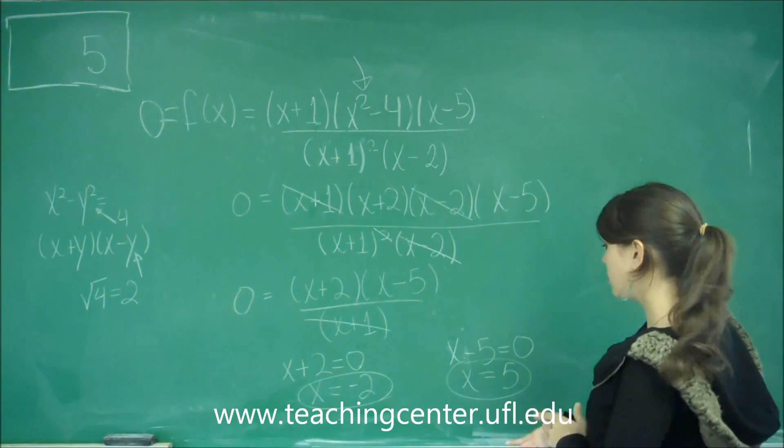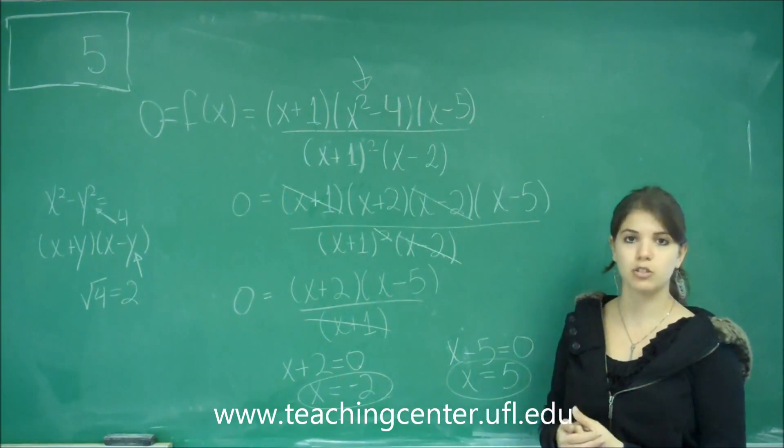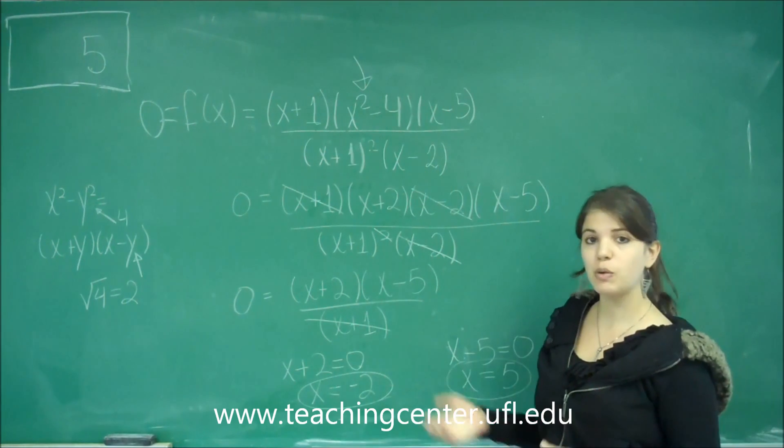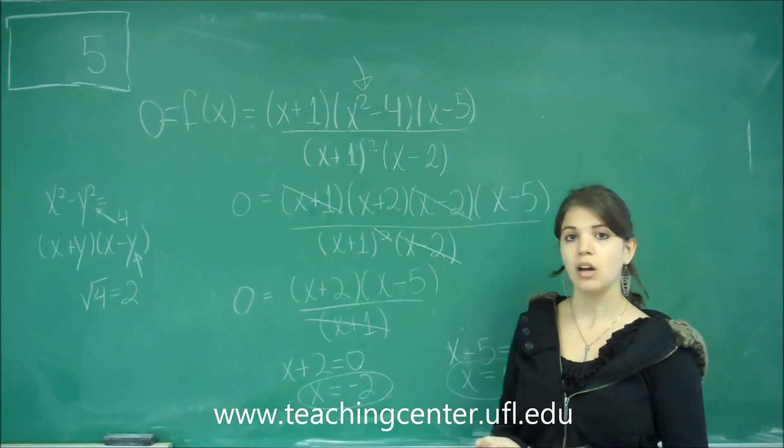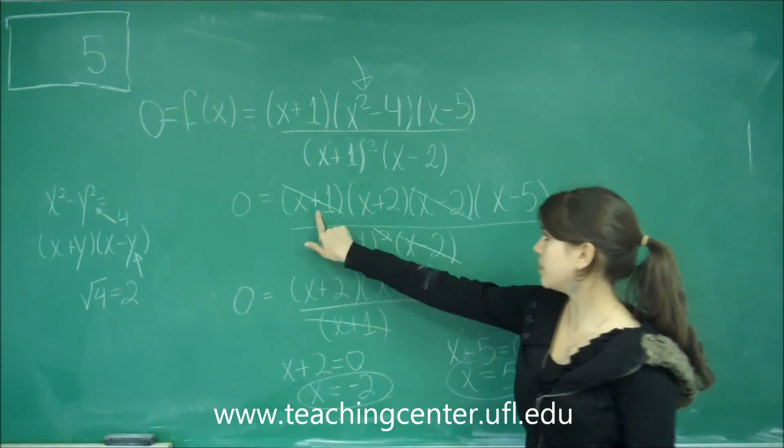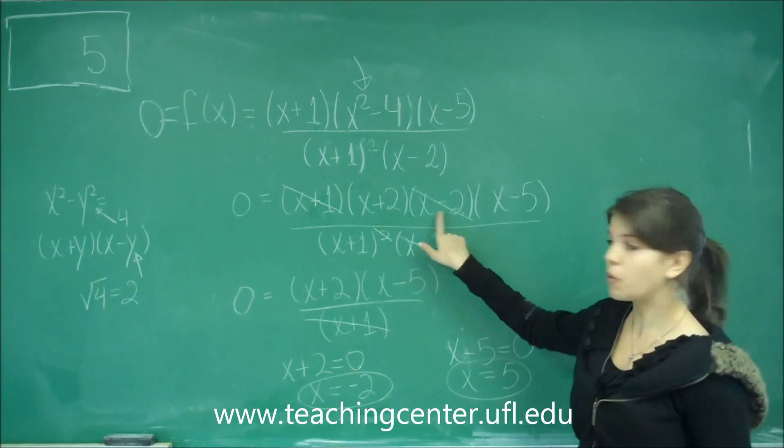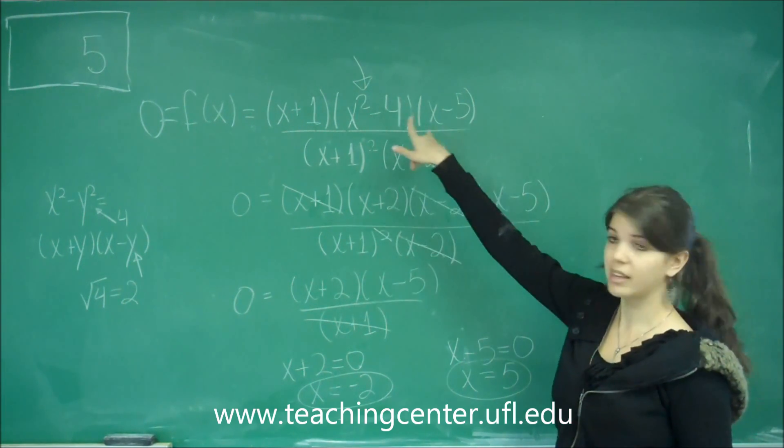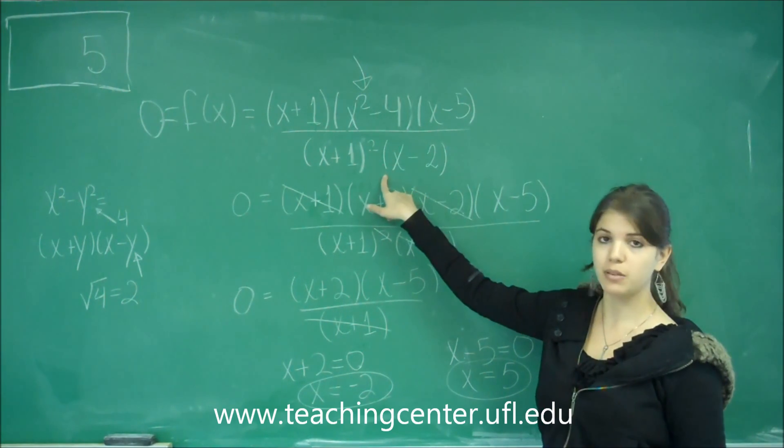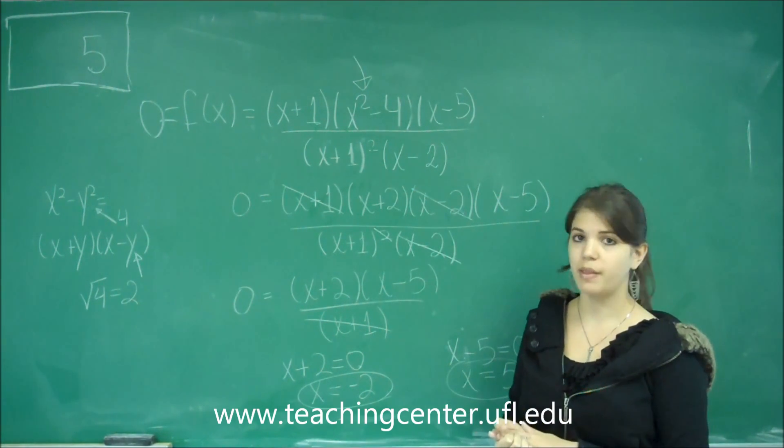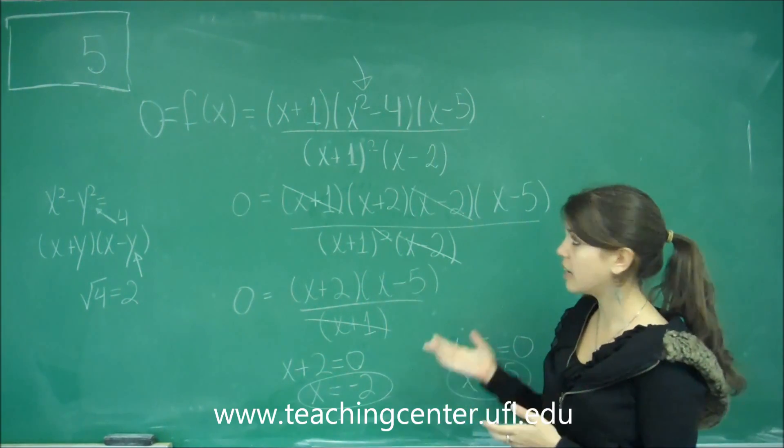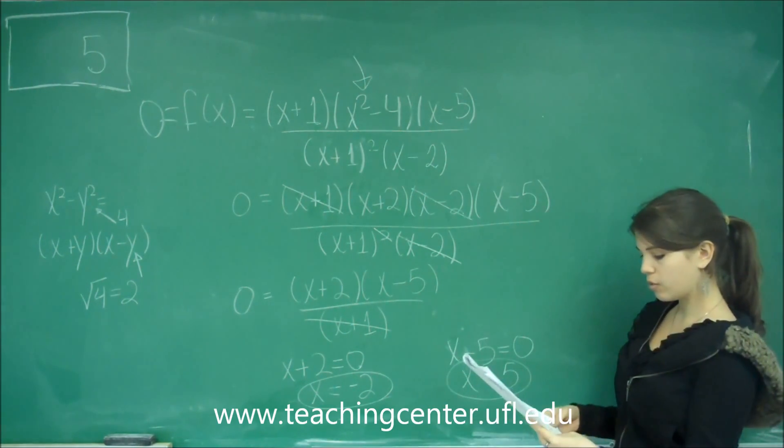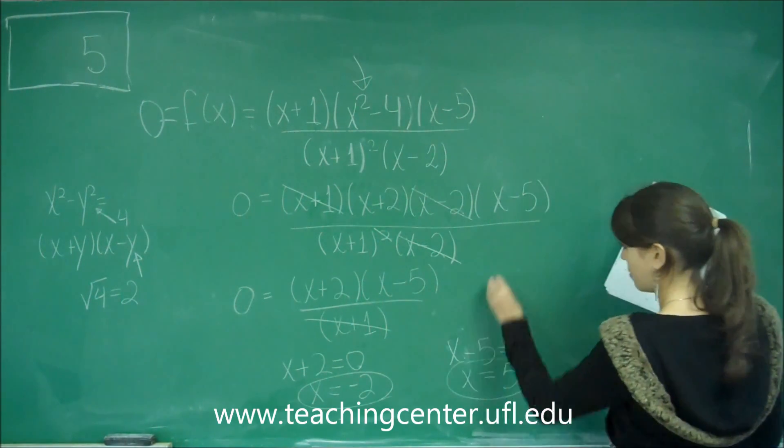We can even go ahead and plug it back into the original equation to make sure that those work, and that we don't get an indeterminate number. If you would have made the mistake of not canceling out the holes, which are this one and that one, those are holes at negative 1 and a hole at x equals 2. When you plug those holes back in there, you would have gotten a denominator that was 0, and you would have seen that there was something wrong, and that couldn't be an x intercept. So, the answers are x equals negative 2, and x equals 5, which is choice B.